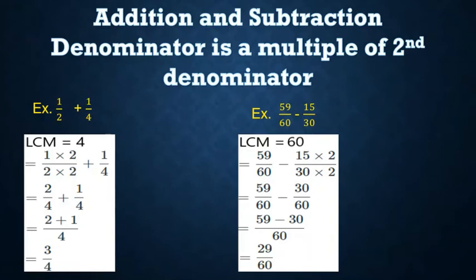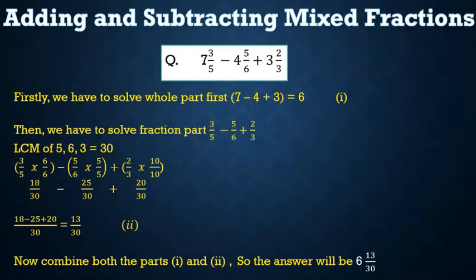Now let us learn how to add and subtract two mixed fractions. There are two ways. The question is 7 3/5 - 4 5/6 + 3 2/3. In the first method, we solve the whole number part first: 7 - 4 + 3 = 6. We set this aside and will combine it at the end.